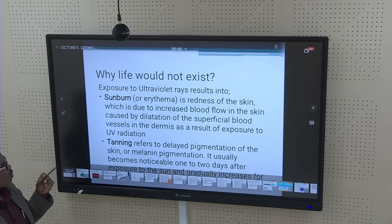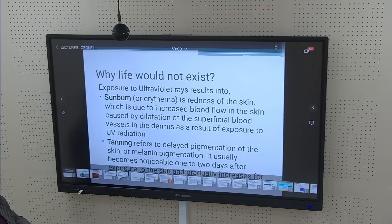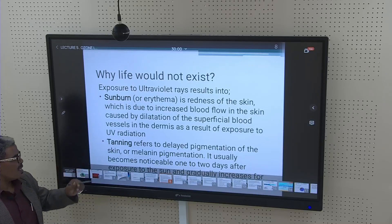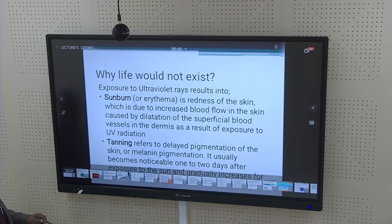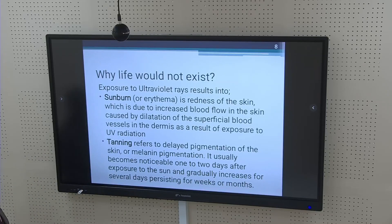Exposure to ultraviolet rays would result in the following. Sunburn — redness of the skin — could occur due to increased blood flow caused by dilation of superficial blood vessels as a result of UV radiation exposure. Tanning refers to delayed pigmentation of the skin, which becomes noticeable one to two days after sun exposure and gradually increases for several days, persisting for weeks or months.